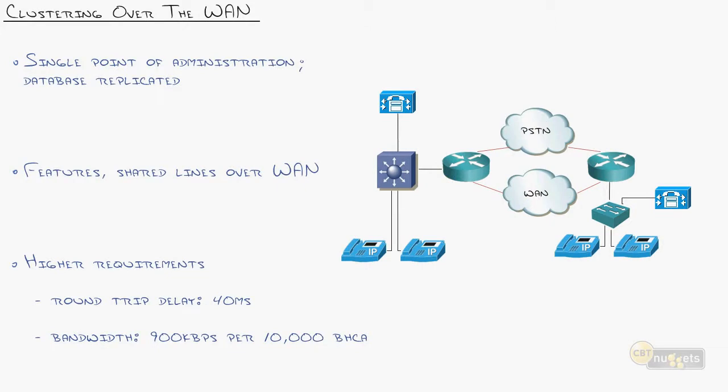There is one more model to throw out there, and you might have been thinking about this on your own: clustering over the WAN. You might have been thinking is it possible to put the publisher at one site and maybe a database subscriber at the other site to where you've got one database replicating between the two, and now you just configure your extensions like 1001, 2001. You don't need anything special because they're all in one database. The answer is yes, you can do that, sort of. The beauty of it is you do have a single point of administration. Changes here affect these phones, it's very easy to handle a network like this.